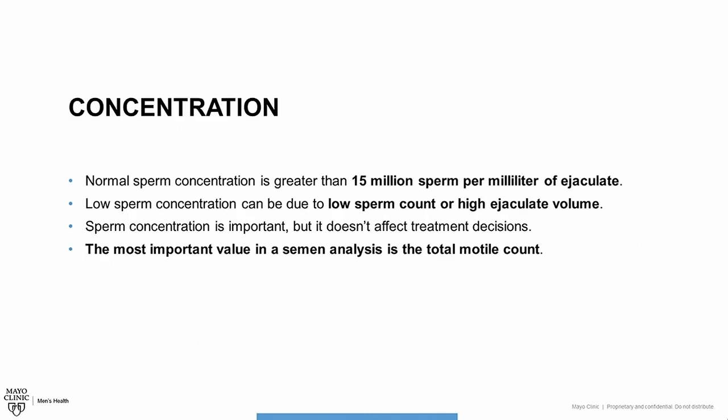Concentration is the amount of sperm in the semen. A normal amount of sperm is more than 15 million sperm per milliliter of ejaculate. A low amount of sperm can be caused by a low sperm count or by a large amount of ejaculate. This number is important, but it doesn't affect treatment decisions. The most important value in a semen analysis is the total motile count, which we'll discuss in detail further.